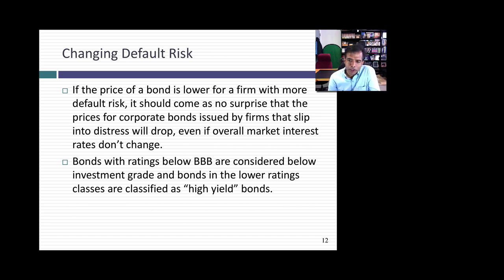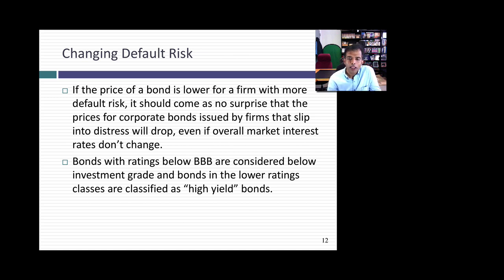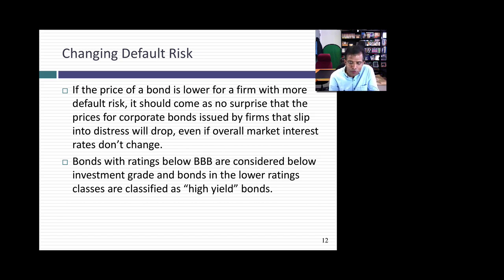The value of a corporate bond is a function of how much default risk you see in the bond. That bond rated BBB — if tomorrow you discovered the company had done something awful and its rating dropped to single B, the default spread will widen, the interest rate will go up, and even though the coupon and face value stay the same, the price of the bond will drop. If your rating drops below BBB, you're considered below investment grade. BBB is the dividing line between investment grade bonds and non-investment grade. Many companies blanch at the thought of dropping below investment grade. If your rating drops below BBB to single B, the interest rates on those bonds will go up and they're classified as high-yield bonds.